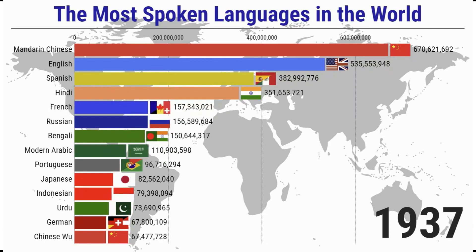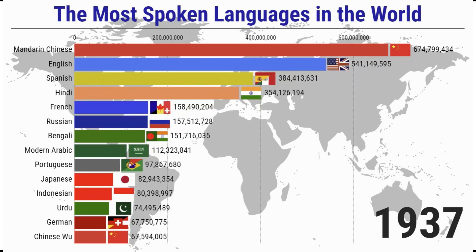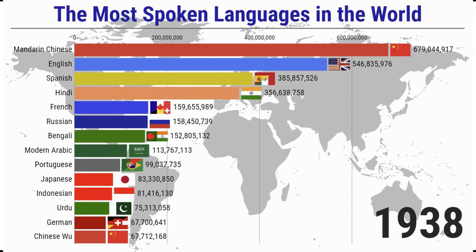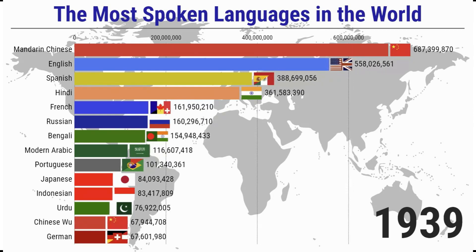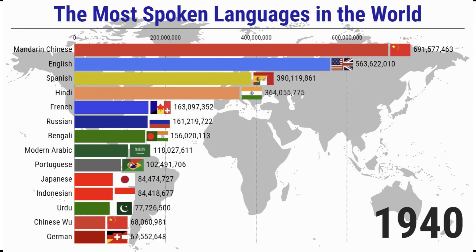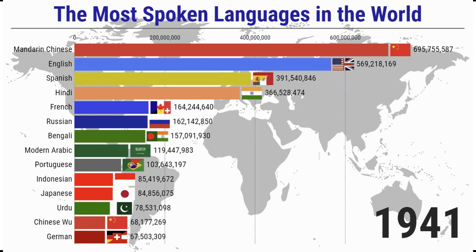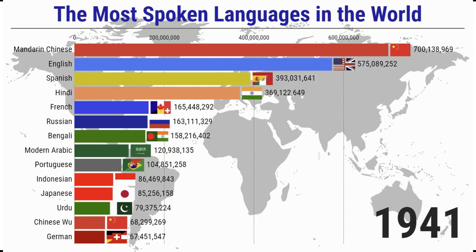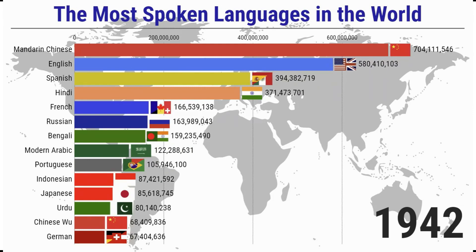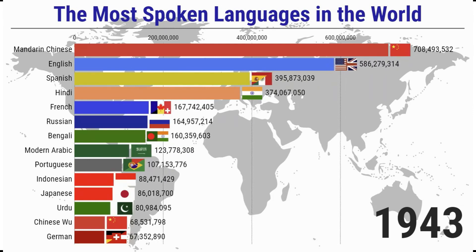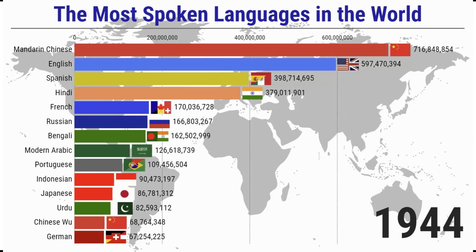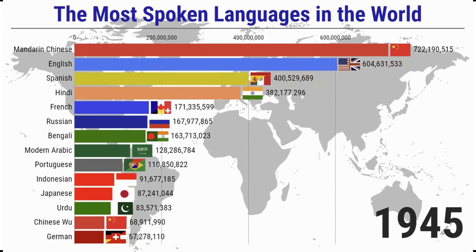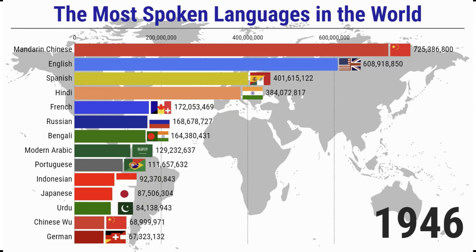Ranking of official languages most commonly used by international organizations: as of 2020, there are over 62,000 international organizations in the world, including intergovernmental organizations with sovereign states and non-governmental organizations established by civil society. They are both global and regional in nature, and some use multiple official languages while others use a single official language.